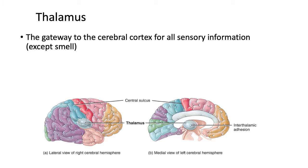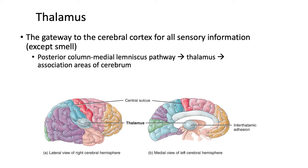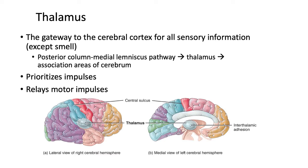The thalamus serves as the gateway to the cerebral cortex for all sensory information except for smell. The posterior column medial lemniscus pathway brings sensory information to the thalamus. With all this incoming sensory information, the thalamus helps to prioritize what information is important and what can be ignored. The thalamus also helps to relay motor information going in the opposite direction, out from the motor cortex to the corticospinal tracts.